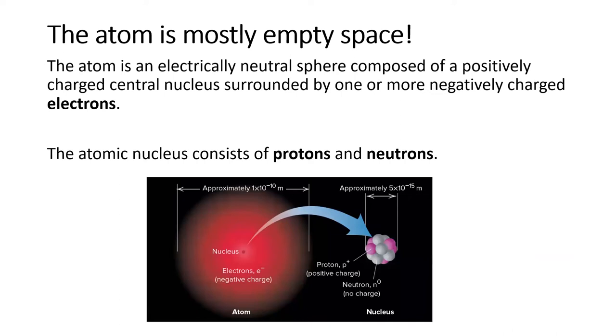In the middle of an atom is an extremely dense nucleus, which contains all the mass of the atom. The nucleus is composed of protons and neutrons. Zipping around the outside of the atom are electrons.